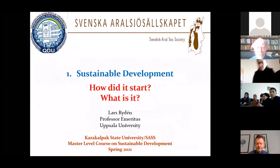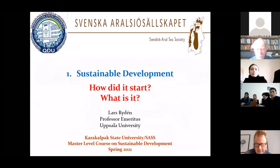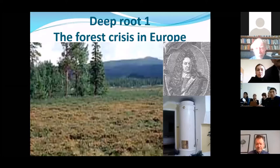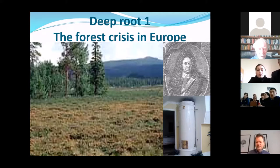We will start with the beginning of sustainable development and then try to find out what it actually is. It started a long time ago. The forest crisis in Europe was very urgent in the beginning of the 1700s — 300 years ago, even more. And in Germany, the King of Saxony asked his forester to solve this crisis.